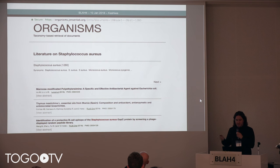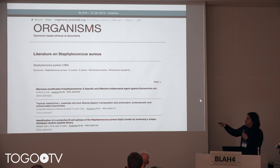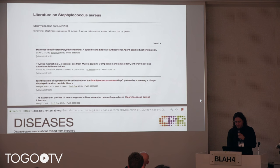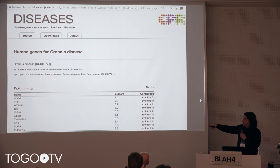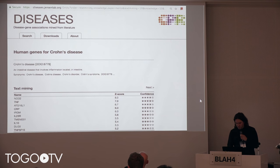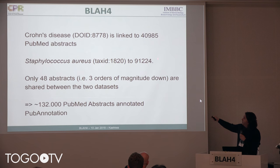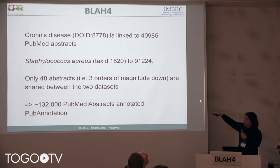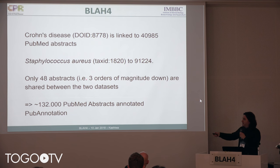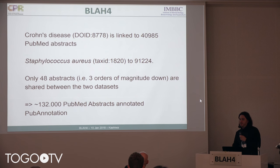As seen in the previous talks, there is also the organisms web resource that allows you to perform document retrieval that is taxonomy-aware. For example, you would expect to find Crohn's disease highly associated with the NOD2 gene. We have around 41,000 abstracts linked to Crohn's disease and another 91,000 abstracts linked to Staphylococcus aureus, while they share only 48 abstracts between these two datasets. The idea is to use indirect entities to find links between the two.